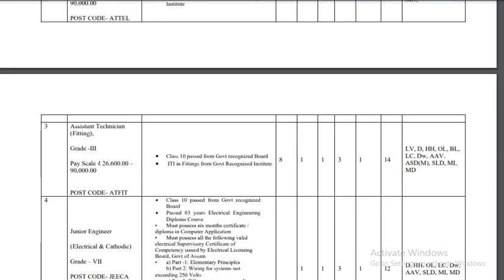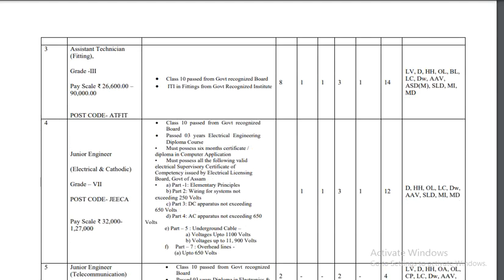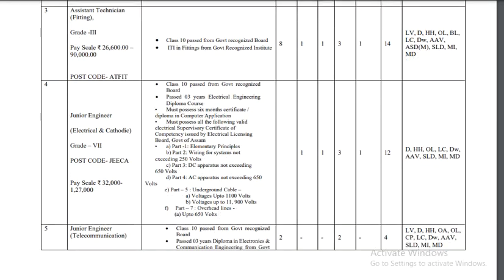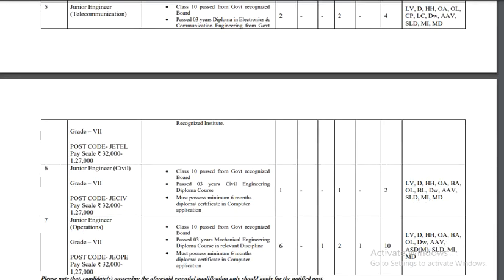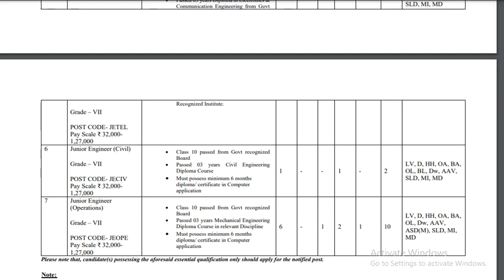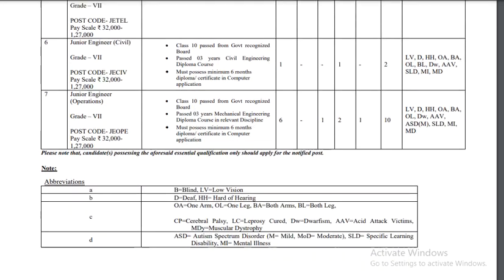Assistant Technician: Class 10 pass with ITI in electronics or electrical is required. Assistant Technician Fitting is also listed. Junior Engineer Electrical requires an electrical diploma along with Class 10 pass — 12 vacancies. Junior Engineer Telecommunications has 13 vacancies. Junior Engineer Civil has 2 vacancies. Junior Engineer Operations requires a mechanical engineering diploma.